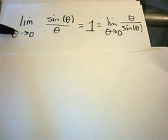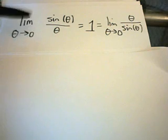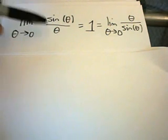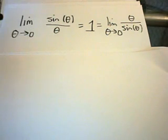And again, if you try the plug and chug method, if you plug in theta equals zero, you'll get sine of zero, which is zero, and zero on the bottom. So you get zero over zero.